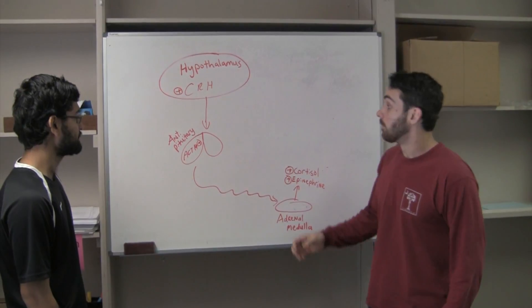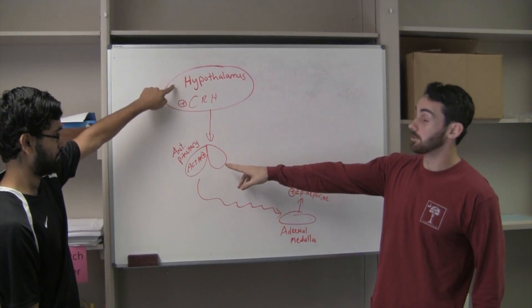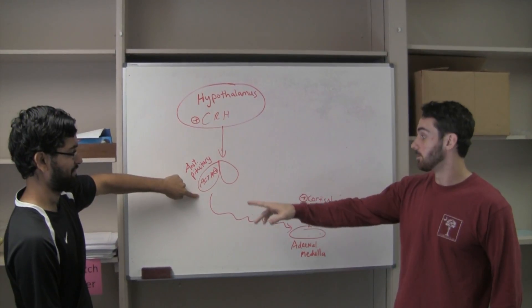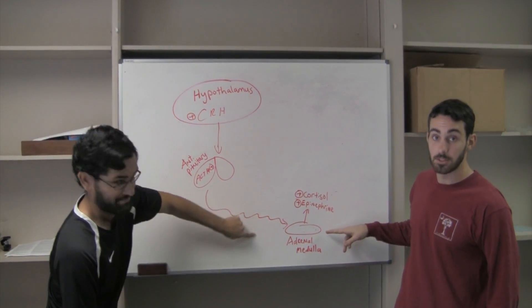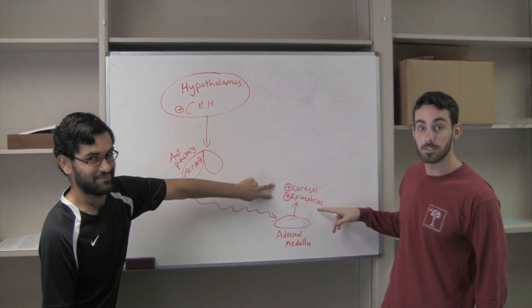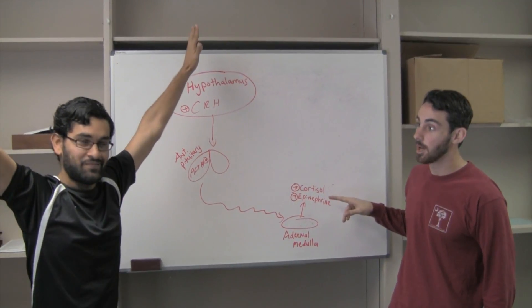As I was saying, once the anterior pituitary gets the signal from the hypothalamus, it's going to release ACTH, which is then going to travel to the medulla of the adrenal and stimulate epinephrine release and cortisol. Do you know what happens after that, Harsh?